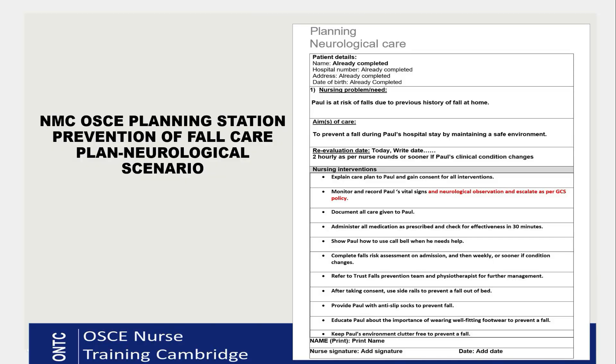For nursing interventions: first, explain the care plan to Paul and gain consent for all interventions. Second, monitor and record vital signs and neurological observations — because this is a neuro scenario, you're doing vitals and neurological observations, which include Glasgow Coma Scale, eye assessments, pupil assessment, and limb assessment. You plot on the GCS chart, not the NEWS chart. Write: 'Monitor and record Paul's vital signs and neurological observations and escalate as per GCS policy.' Do not mention NEWS here.